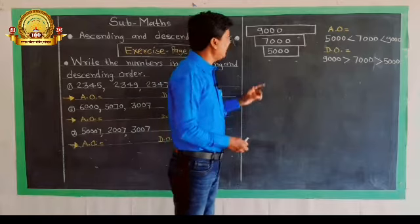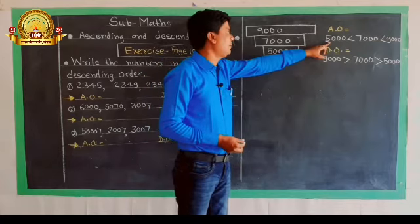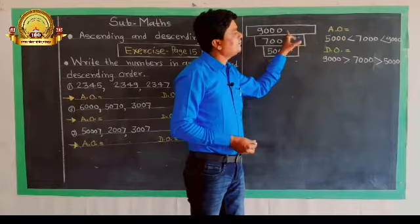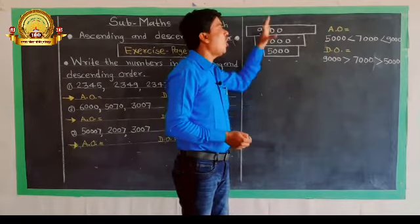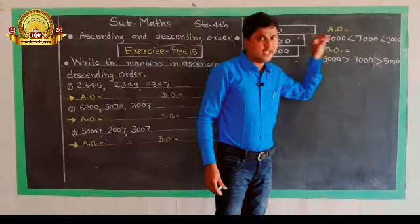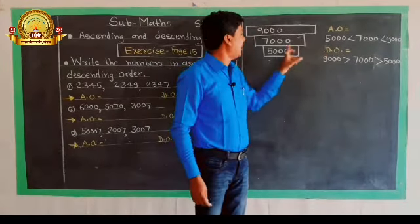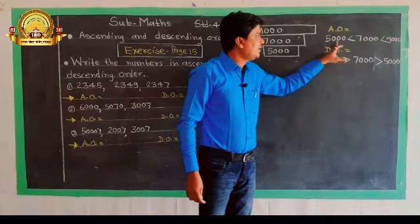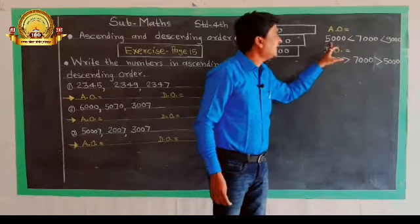In ascending order, we start from the smallest. Among 5,000, 7,000, and 9,000, the smallest is 5,000. So 5,000 is smaller than 7,000, and 7,000 is smaller than 9,000. The ascending order of these numbers is: 5,000, 7,000, 9,000 — arranged from smallest to biggest.